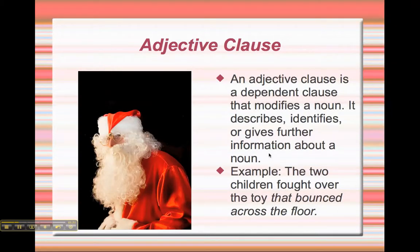And then we have an adjective clause, which is a dependent clause that modifies a noun. It describes, identifies, or gives further information about a noun. So the example that we have is: the two children fought over the toy that bounced across the floor. The noun is the toy, and that bounced across the floor is the adjective clause that modifies the word toy.